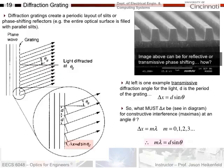Let's wrap this up and talk about a few more topics, and we'll be finished with diffraction. The first thing I want to talk about is something called a diffraction grating. When you talk about a grating, it means it has a significant periodic layout of slits or phase-shifting reflectors. Here's an example grating — a plane wave comes in and the grating has all these little holes in it, a bunch of parallel slits in series that are very periodic. The light will be diffracted at a very specific diffraction angle, theta d, and so are all integer numbers of that angle.